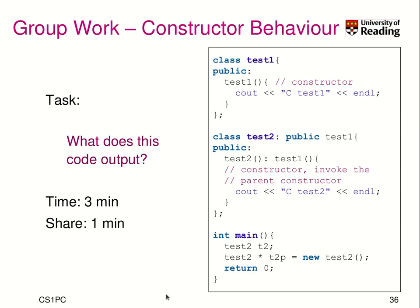As this can sometimes be a bit tricky to comprehend, here is a little task for you that illustrates this issue. We have a class test1 that prints in the constructor the message ctest1, which stands for constructor test1. Then we have a class test2 that inherits from test1. In test2 it calls the test1 constructor, and in the body of its constructor it prints ctest2. Here is the main method that creates a test2 object — one on the stack as a local variable, and one on the heap using new. Think about what this actually prints.